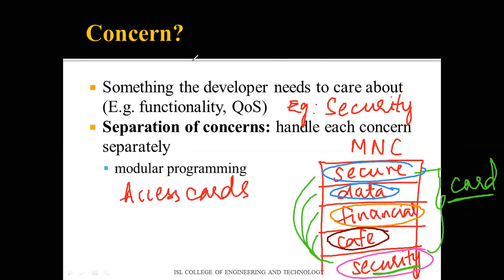This separation between concerns is called the separation of concern. Separation of concerns is achieved through modular programming — coding in different parts, so that code for the security card is separate from the café, financial, data, and project areas. This modular approach keeps each concern isolated.